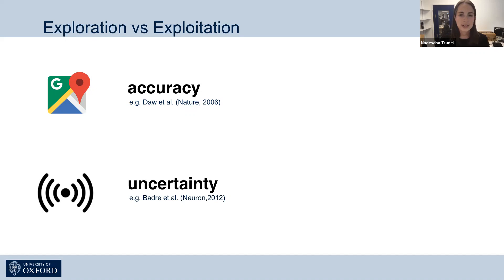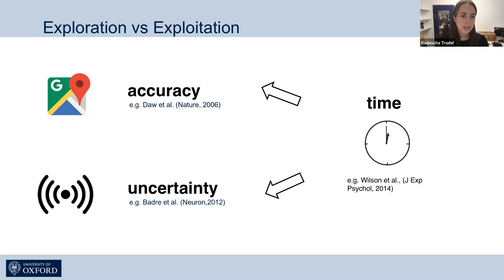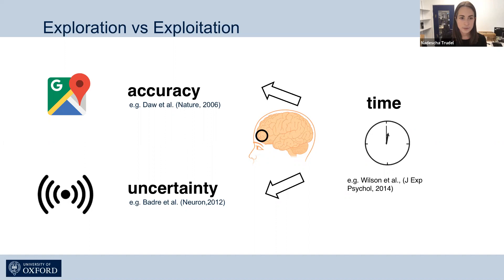Whether you make an explorative or exploitative decision is often impacted by the time you have — the number of times you're presented with the same predictors — because it only makes sense to explore uncertain predictors if you also have a lot of time to make use of your gained knowledge during later encounters. We were interested in how accuracy and uncertainty drive choices across time, and how these concepts are represented in the brain when participants are in phases of exploration and exploitation.